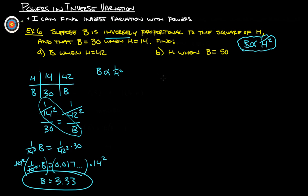So we know that H and B, when H is 14, B is 30, that's all from our initial information up here. Now find H when B is 50. We can still do this the same way.